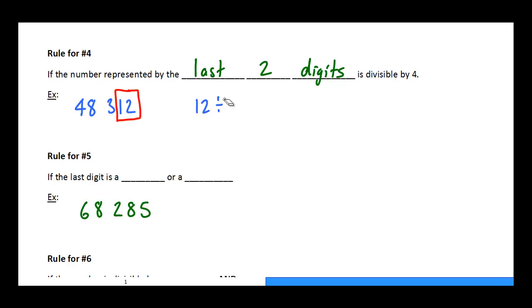Pardon me, is 12 divisible by 4? So 12 divided by 4 is just 3. So yes, this entire number is divisible by 4. 4 is a factor of that entire number.